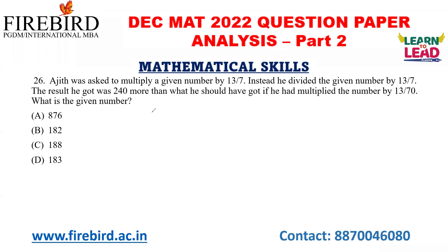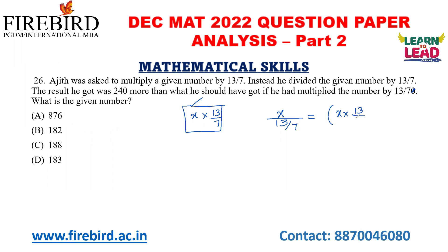Coming back. Ajit was asked to multiply a given number by 13 by 7. Instead, he divided the number by 13 by 7. The result he got was 240 more than what he should have got if he had multiplied by 13 by 7. What is the given number? Let the number be X. So X divided by (13/7) equals X multiplied by (13/7) plus 240. That gives 7x by 13 equals 13x by 7 plus 240, so 7x by 13 minus 13x by 7 equals 240.